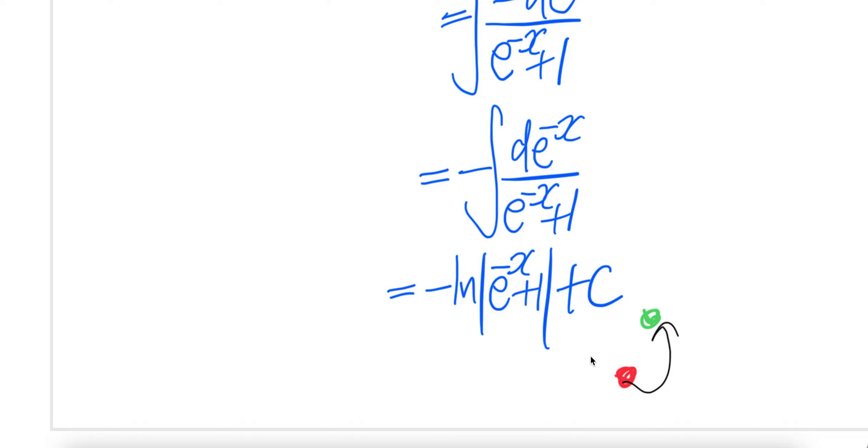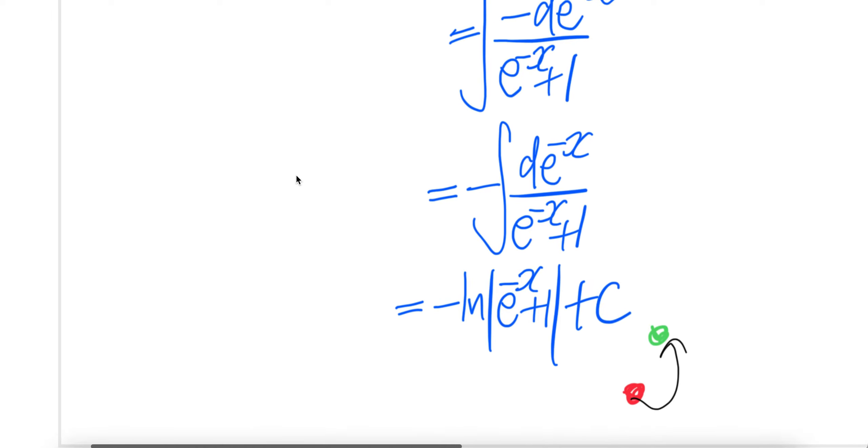Now the question is, how come, how come this result is different from what we saw on the first two? Because the first two is an x minus something, right?